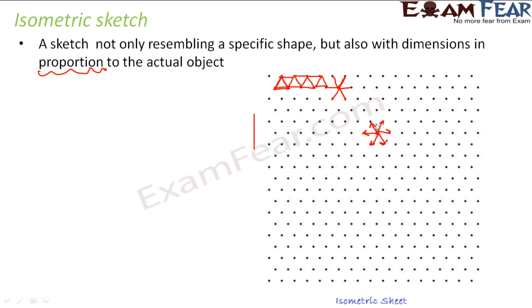So, whether you want to draw a cube, a cuboid, a house, or a tree, even if you cannot physically measure 10 centimeters, you can consider each dot interval as one unit — say one centimeter. To draw 10 centimeters, you simply count 10 intervals. This means that whatever you draw is in proportion to the measurements given for that solid object.